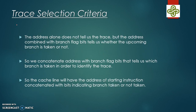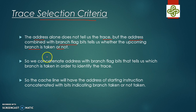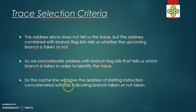Now let us look at the trace cache selection criteria. The address alone does not identify a particular trace, but the address combined with branch flag bits tells us whether each upcoming branch is taken or not taken. We concatenate the address with the branch flag bits to identify a particular trace. The cached line will have the starting instruction address concatenated with bits indicating whether each branch is taken or not.